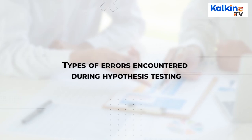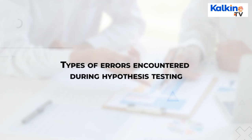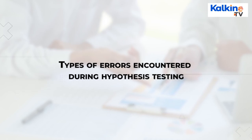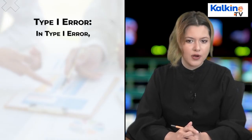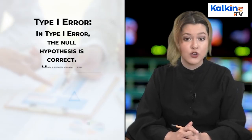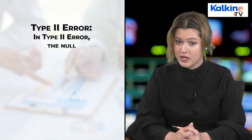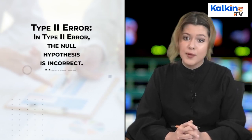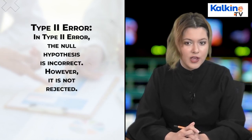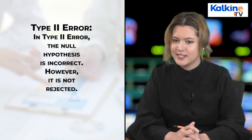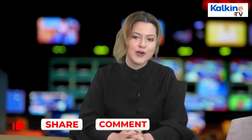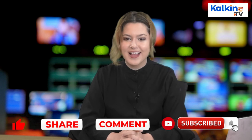In hypothesis testing there are primarily two types of errors: Type 1 and Type 2. In a Type 1 error, the null hypothesis is correct, however it is rejected incorrectly. In a Type 2 error, the null hypothesis is incorrect, however it is not rejected. Make sure to subscribe to our channel and click the bell icon to be notified of our latest videos. This is Holly Shields signing off.